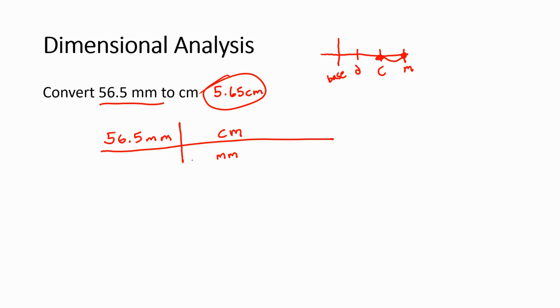I usually put the number that's bigger than one with the smaller unit. Milli is smaller than centi. So they're in a ratio of one to 10.